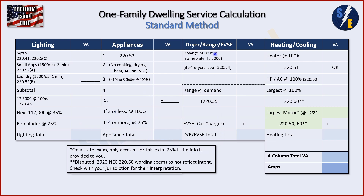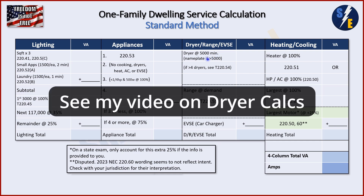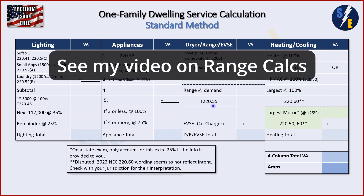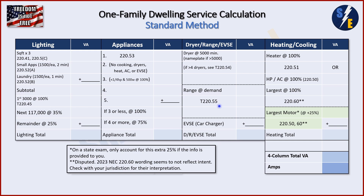Then we move on to the dryer, range, and EVSE column. We take our dryer at a minimum 5,000, or the nameplate if it's over 5,000. If you have more than four dryers, you have to refer to table 220.54. Then we take our range at demand, which table 220.55 will tell us. Then we have the EVSE — this is where it's different from 2020. EVSEs were not separated out of the appliance category before, but now they are excluded specifically from the appliances, so we give them their own line item at 100%.